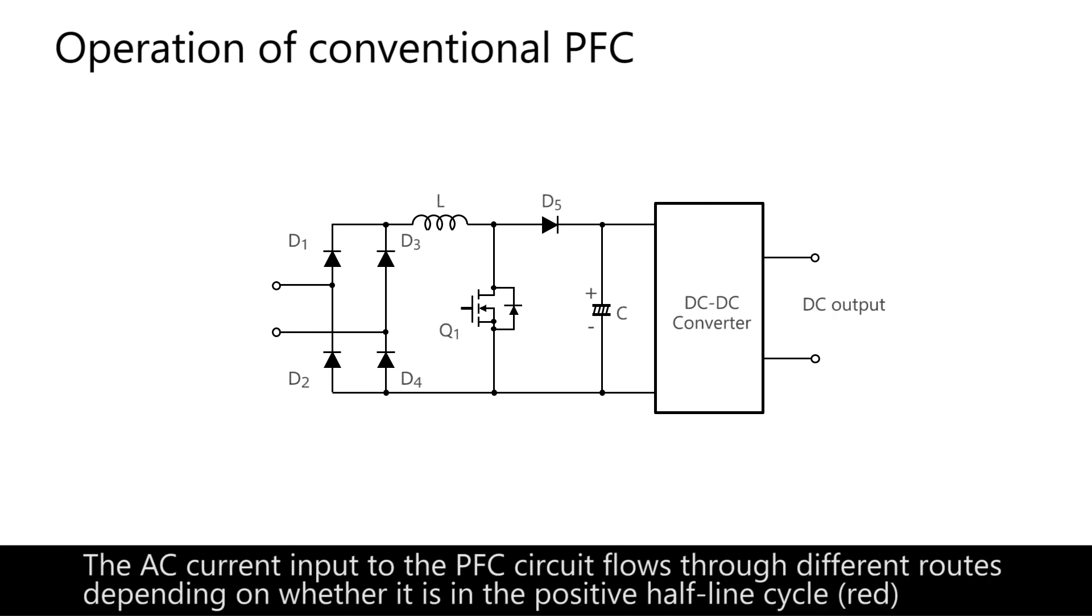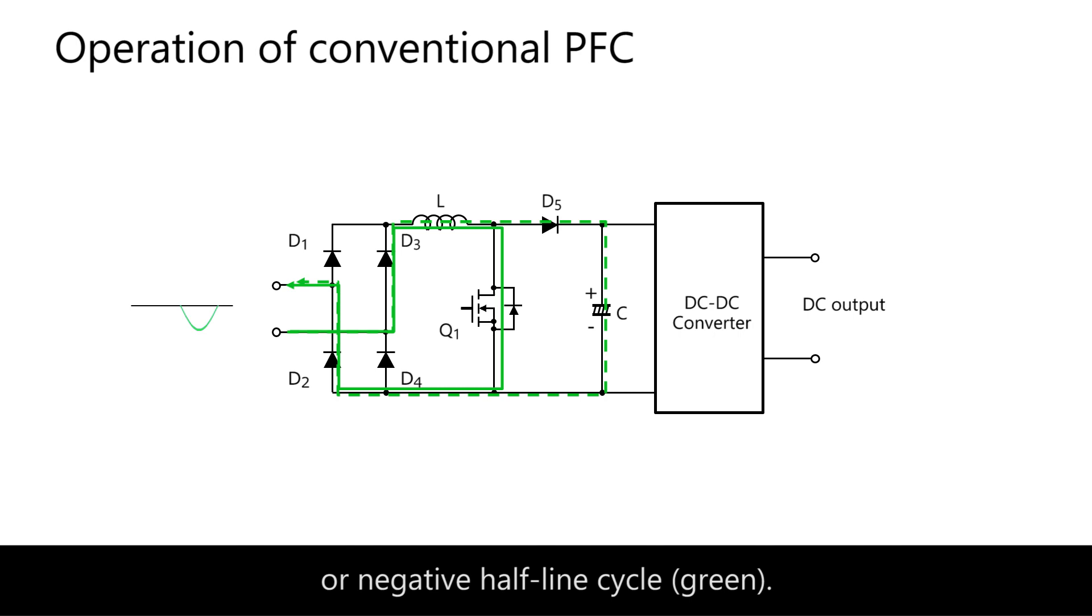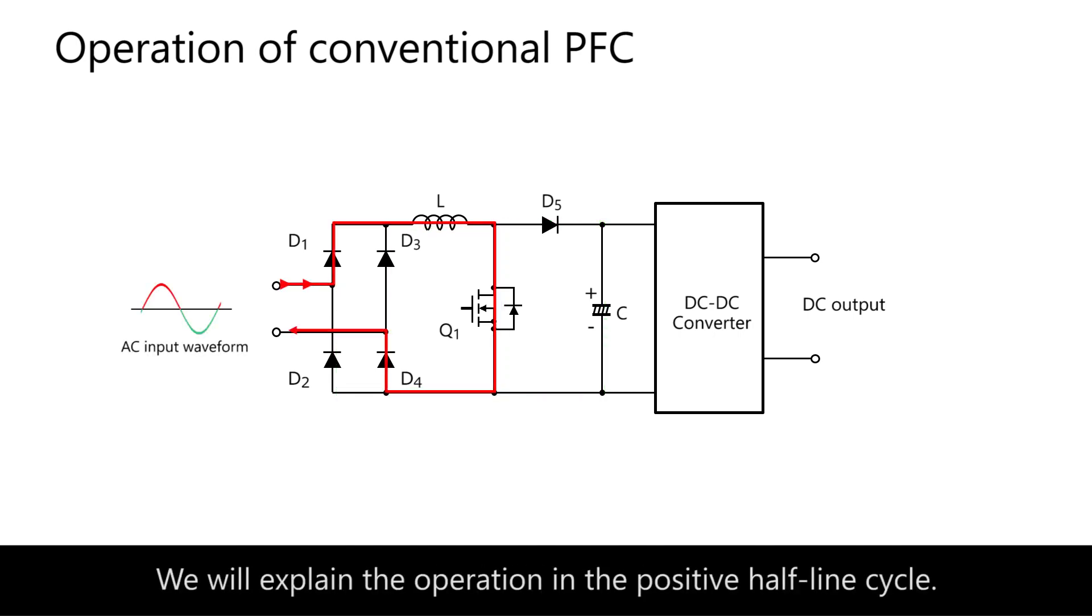The AC current input to the PFC circuit flows through different routes depending on whether it is in the positive half-line cycle (red) or negative half-line cycle (green). We will explain the operation in the positive half-line cycle.